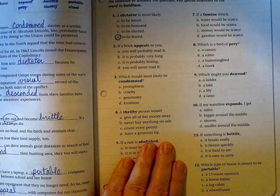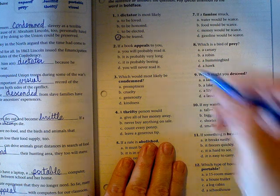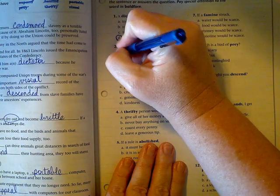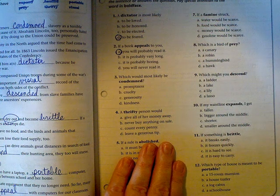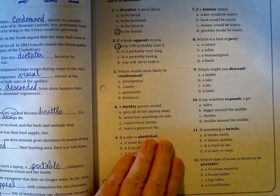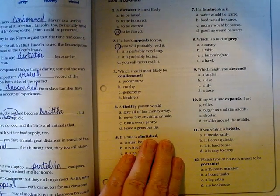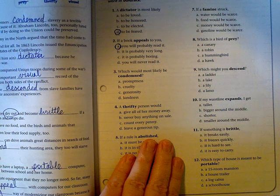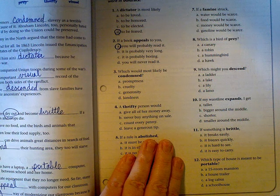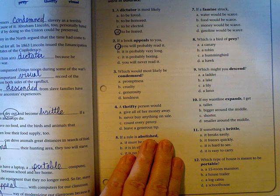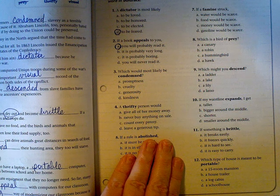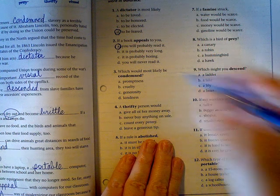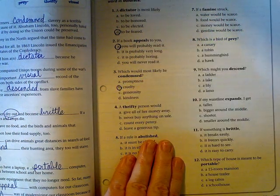Which would most likely be condemned? Promptness - that's being on time - I don't think we'd complain about that. Cruelty? Perhaps. Generosity or kindness? No, we would condemn someone who is cruel.